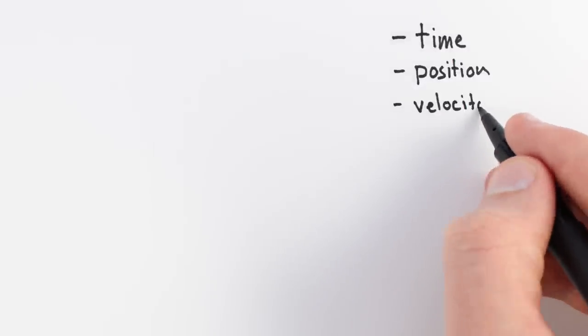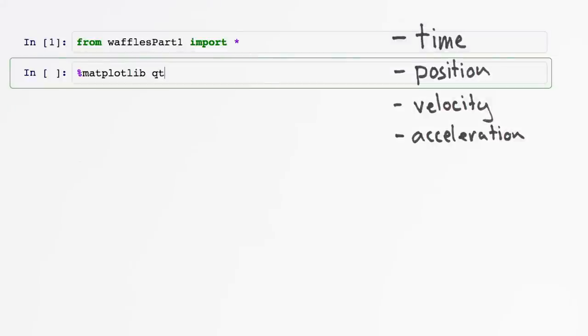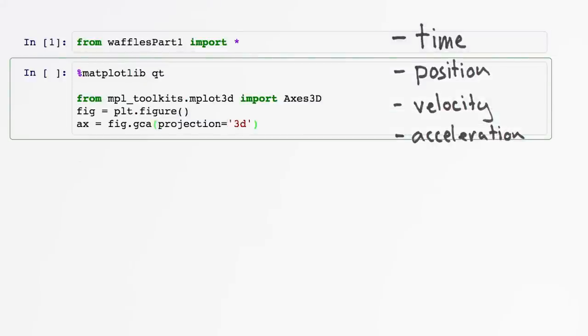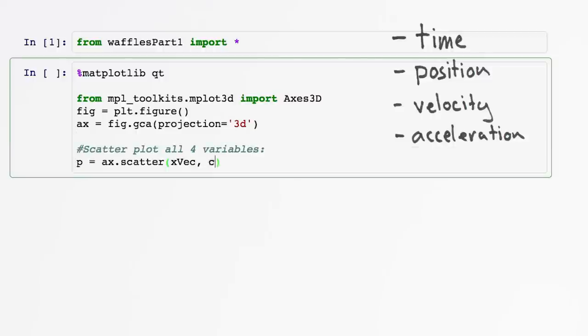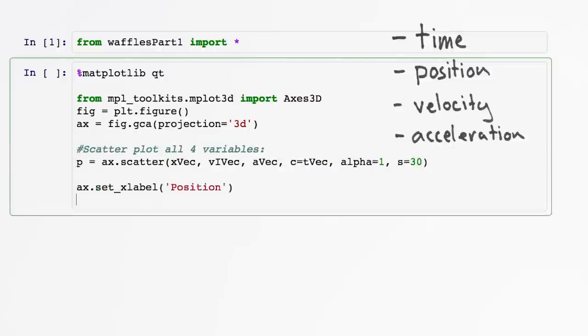For each data point, we have a time, position, velocity, and acceleration. It would be nice to make sense of all this data in a single plot. Plotting four-dimensional data is a bit goofy, but let's give it a try.